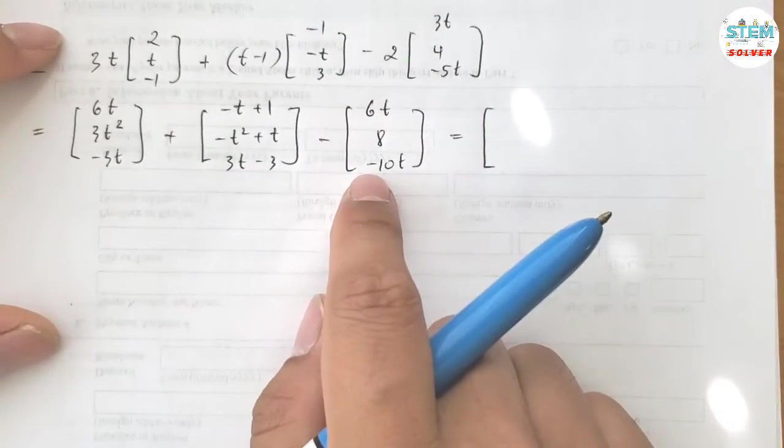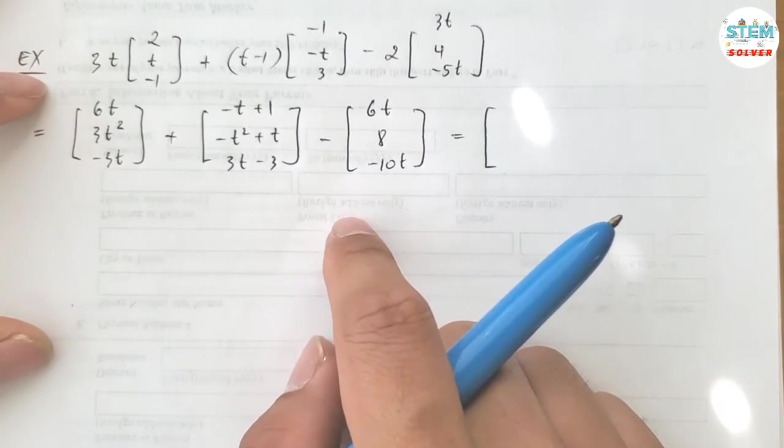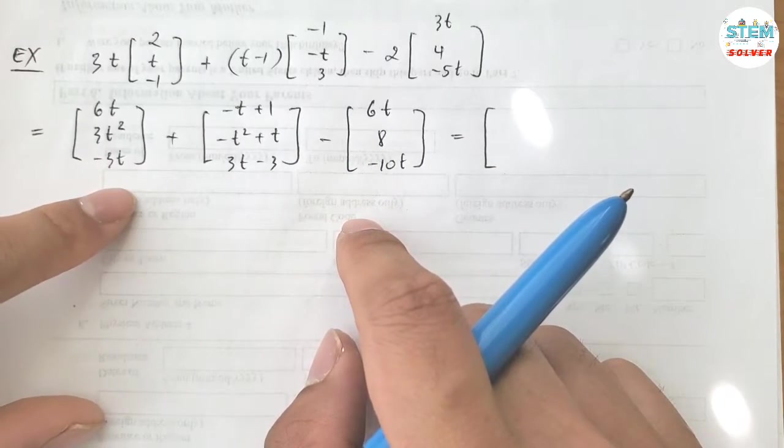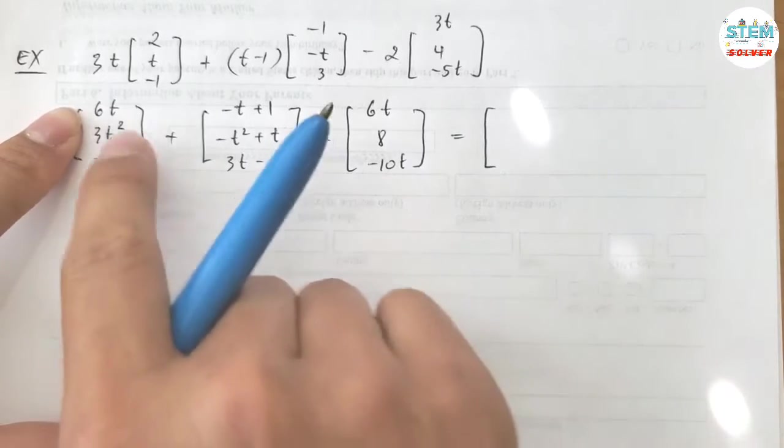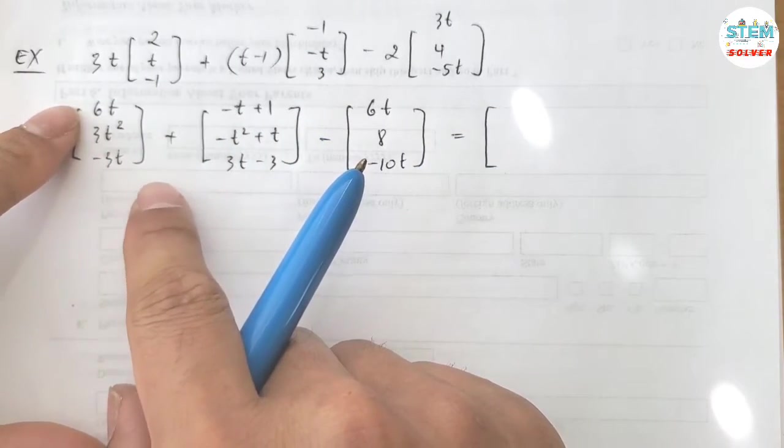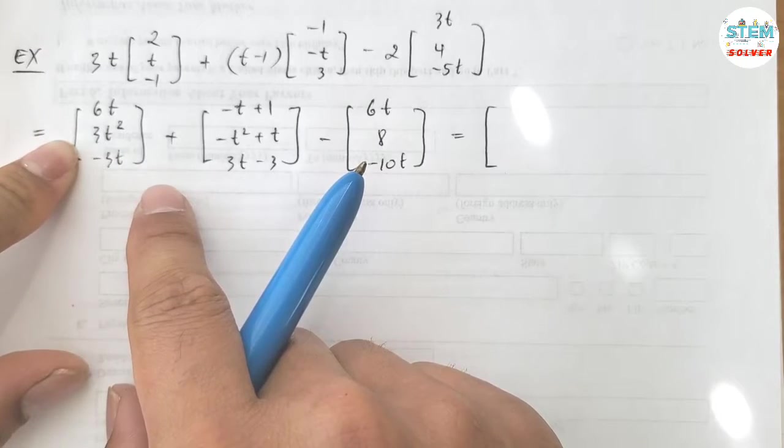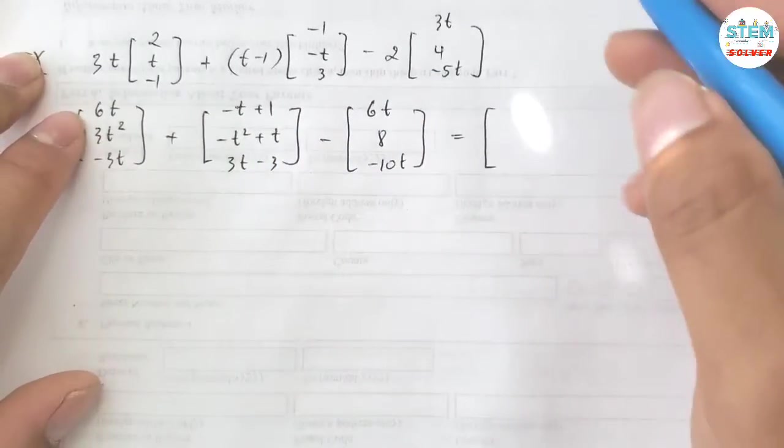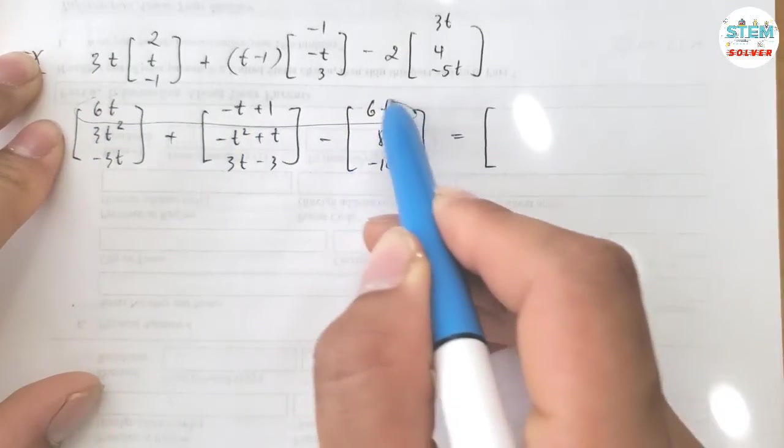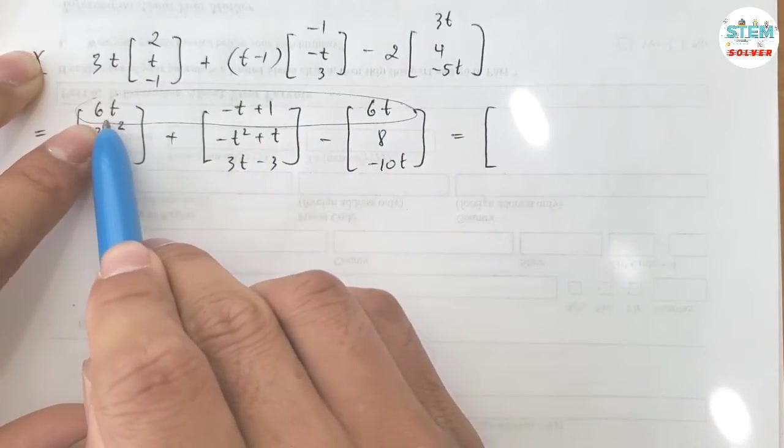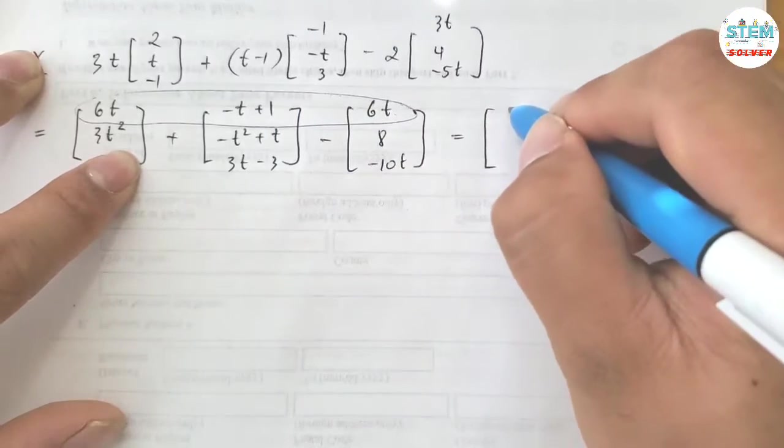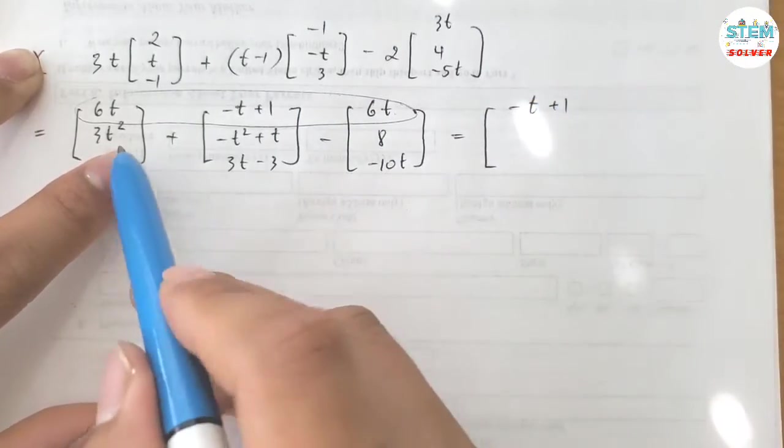Now when you add or subtract matrices together, you add and subtract row by row, column by column. In this case we have a 3 by 1 matrix, so you just add the rows together. So I have negative t plus 1.